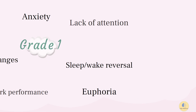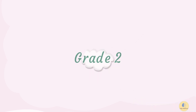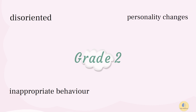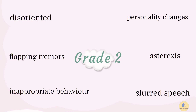Grade 2: Patients are disoriented, especially about time. They also have inappropriate behavior, personality changes, and possibly slurred speech. They start to develop asterixis and flapping tremors in the hands. These patients are hospitalized.